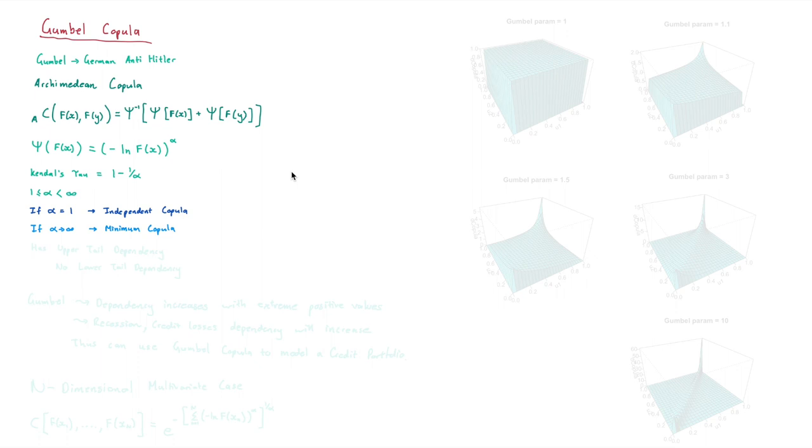And what this essentially does, or how this Gumbel Copula flexes dependency, is through the following: it'll have an upper tail dependency, but it won't have a lower tail dependency.